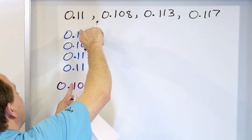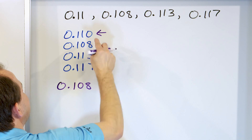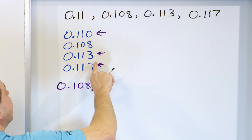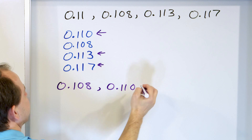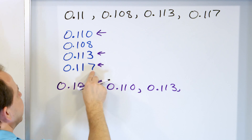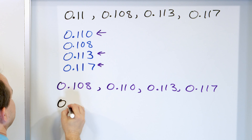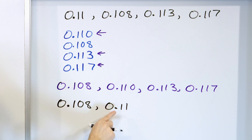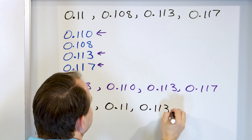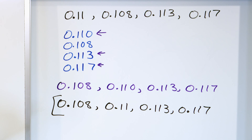Now all the other ones are tied in the hundredths, so to figure out what comes next, we compare their thousandths digits: 0, then 3, then 7. Zero is the smallest, so 0.110 comes next. Then 0.113. Then the largest is 0.117. Converting back to the original numbers: 0.108, 0.11 — we added the zero ourselves — 0.113, and 0.117. Checking: 0.108, 0.11, 0.113, 0.117.